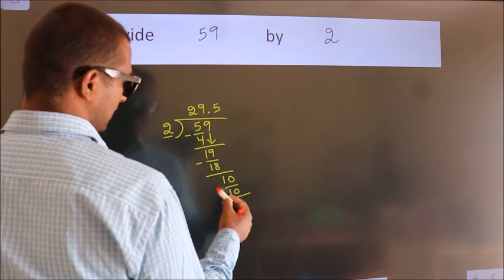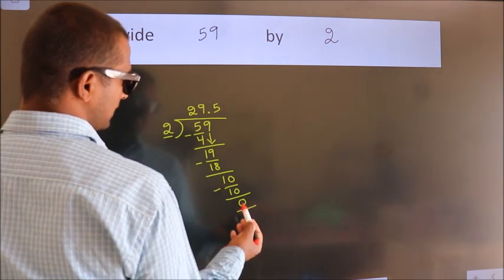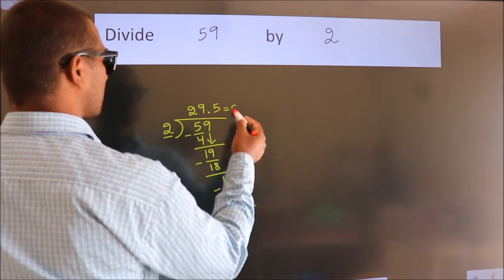Now we subtract. We get 0. We got remainder 0, so this is our quotient.